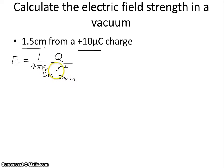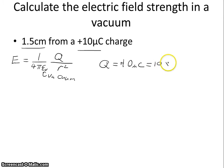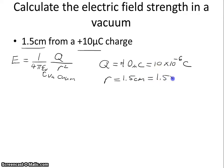Let's start by converting our two quantities — 1.5 centimeters and 10 microcoulombs — into units that match the permittivity of free space. The distance needs to be in meters and the charge needs to be in coulombs. So our charge is equal to 10 microcoulombs, which is 10 times 10 to the minus 6 coulombs, and our distance r is equal to 1.5 centimeters, which is 1.5 times 10 to the minus 2 meters.